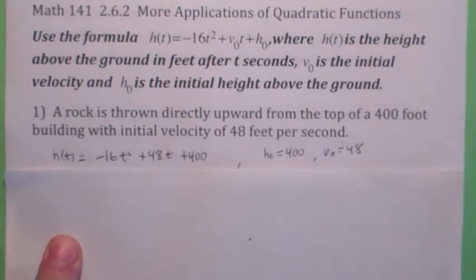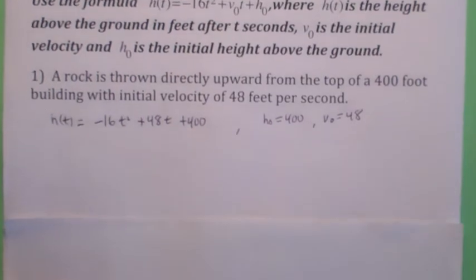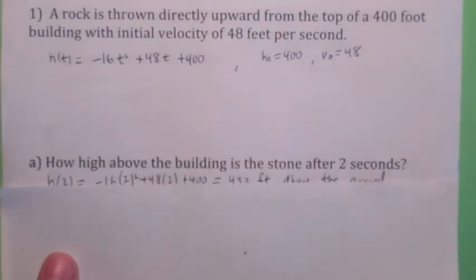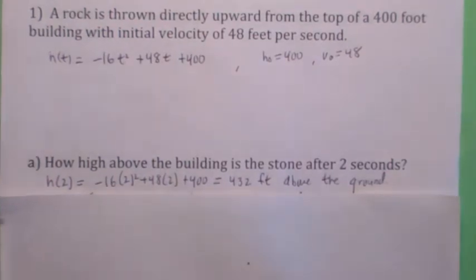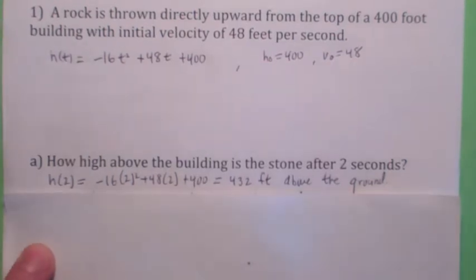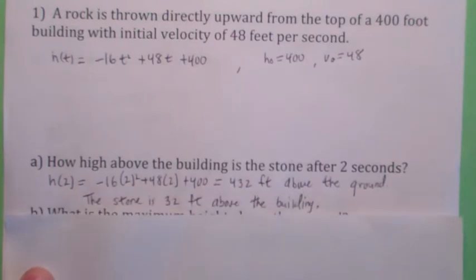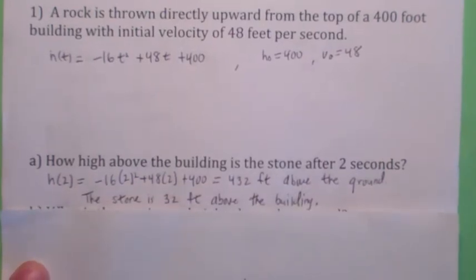So now you have the equation. You can answer any question. What is the first question? The first question is, how high above the building is the stone after 2 seconds? Well, we have h(t), which is the height above the ground. So if you find h(2), which turns out you just plug in 2 everywhere there's a t, you get 432 feet. But the question is, how high above the building is it? So you would have to subtract 400 from that, right? The answer is 32 feet above the building. That's pretty sneaky, isn't it?